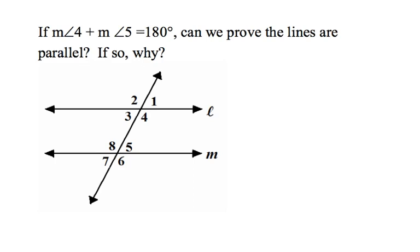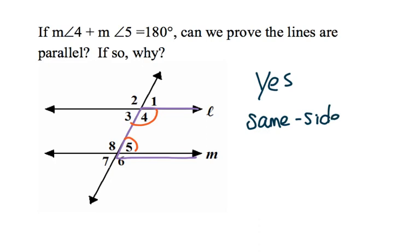Angles 4 and 5 are same side interior angles, so they need to be supplementary — they add to 180 degrees. They cannot be congruent. Angle 4 touches line L and angle 5 touches line M, so this is a yes. Same side interior angles have to be supplementary, while corresponding and alternate interior and exterior angles have to be congruent. So this is the same side interior angle converse.